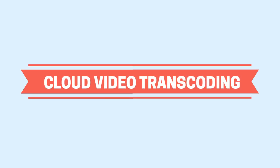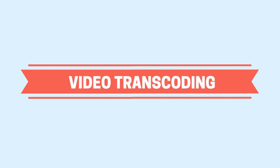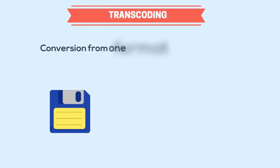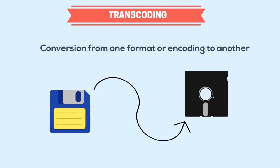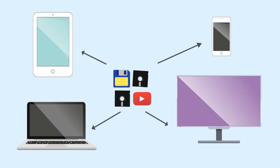In order to understand what cloud video transcoding is, we must first understand what video transcoding is. Transcoding, as it refers to media, is the conversion of a file from one encoding to another. For video, this is done to make the files smaller and more manageable, or convert them into formats supported by specific platforms or devices.